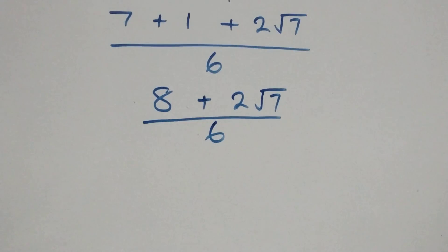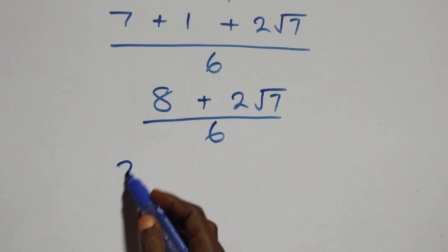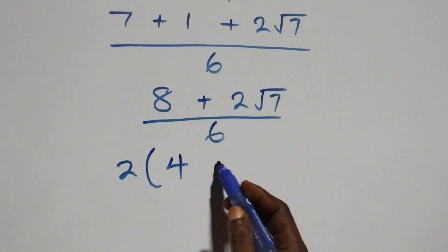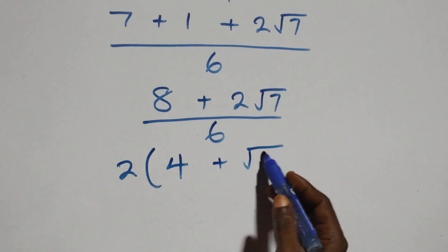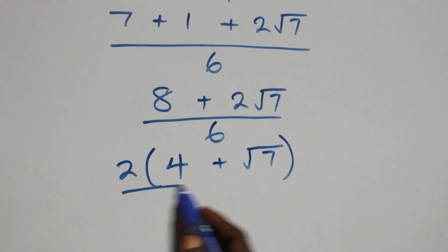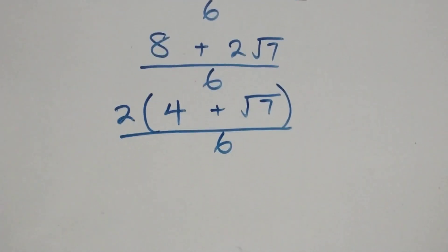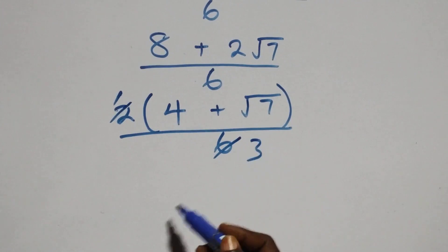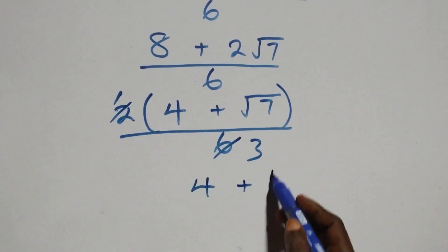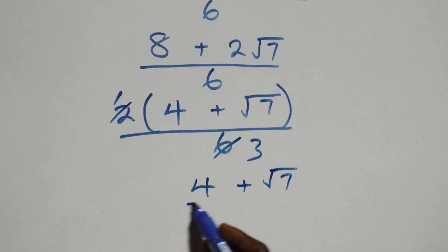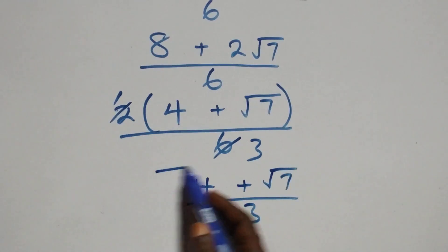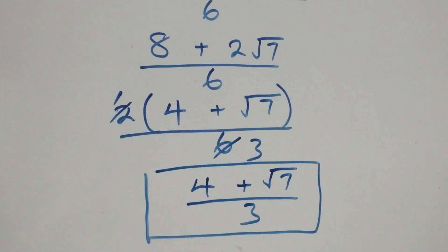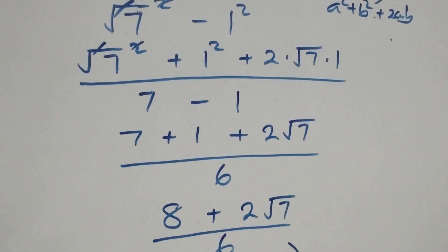We have 8 + 2√7 over 6. We factor out 2 from the numerator: 2(4 + √7) over 6. The 2 cancels with 6 to give 3, so we get (4 + √7) over 3. That is the simplified form of the given problem. Now let's use the second method as well.